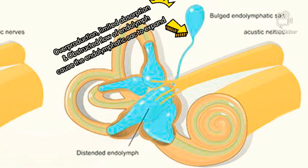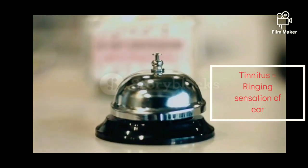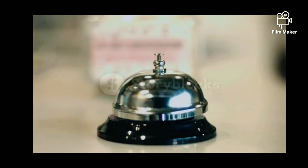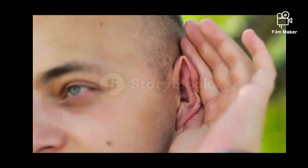Overproduction, limited absorption, and obstructed flow of endolymph cause the endolymphatic sac to expand, leading to signs and symptoms of Meniere's disease. Sometimes a distended endolymphatic sac is called endolymphatic hydrops, meaning increased pressure within the endolymphatic system and dilation of the endolymphatic sac. This distension increases tension on the membrane, causing a feeling of pressure or fullness, tinnitus — a ringing sensation in the ear — and fluctuating sensorineural hearing loss in the affected ear.